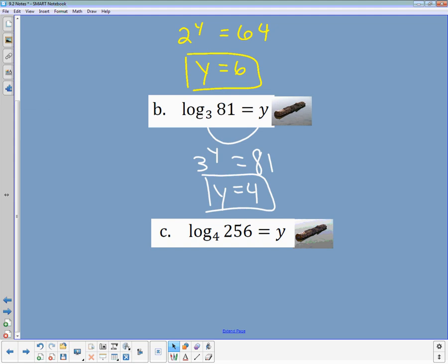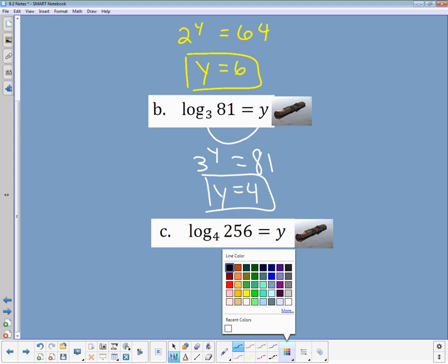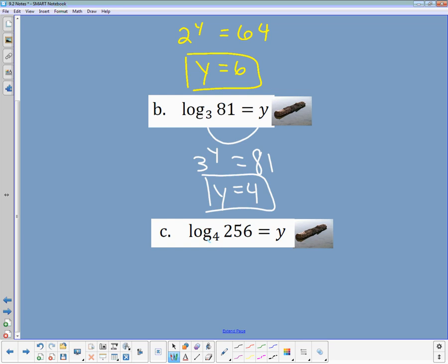One more question like this. Now I'm looking at the log base 4 of 256 equaling some number. So I want to look at the 4, raise it to the y power, and figure out when that is equal to 256. So again, I try. 4 to what power gives me 256? That would be the 4th power. 4 to the 4th power is 256.